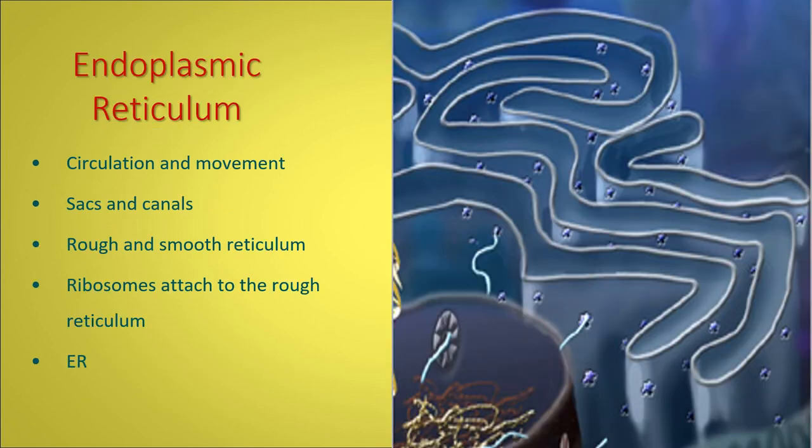Within the cell, you have something called an endoplasmic reticulum. A reticulum is a network. This is like a labyrinth of canals and sacs that run throughout the cell. It takes up most of the cell. This is how things circulate and move around the cell. None of the different contents that want to pass in and out the cell, the gases, the proteins, the lipids have legs. So they don't go walking from A to B, from one organelle to another. They circulate and move around the cell through the endoplasmic reticulum.